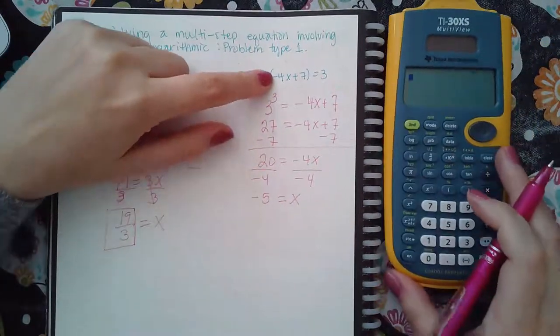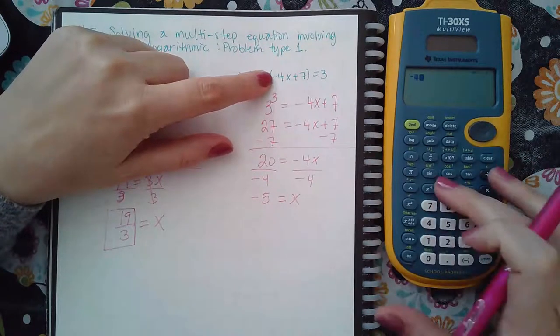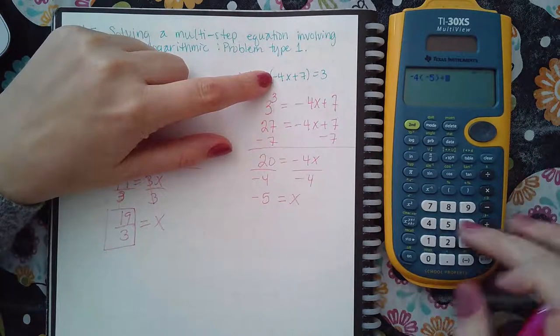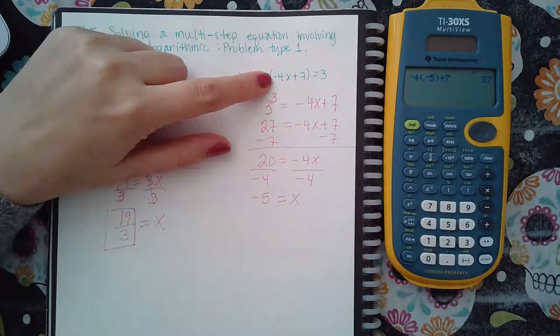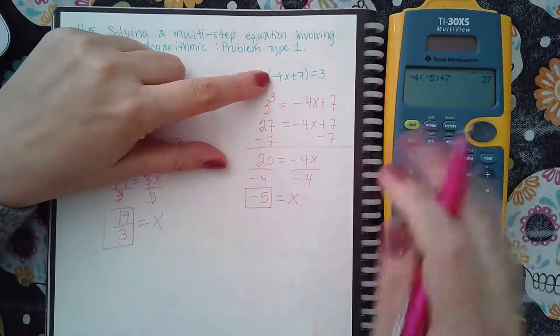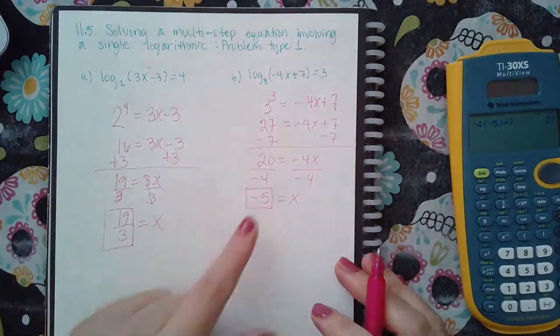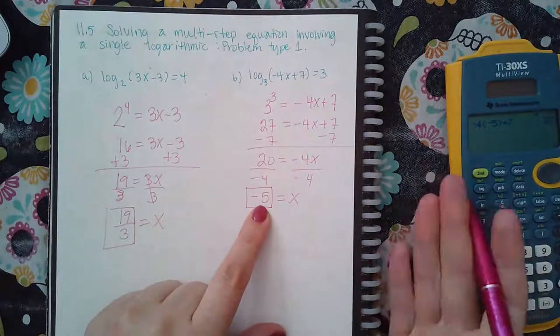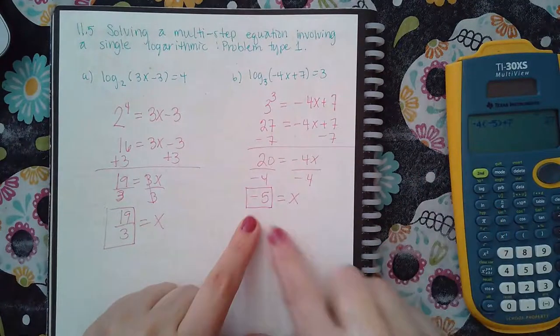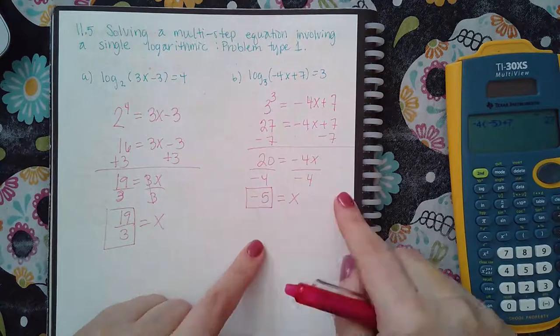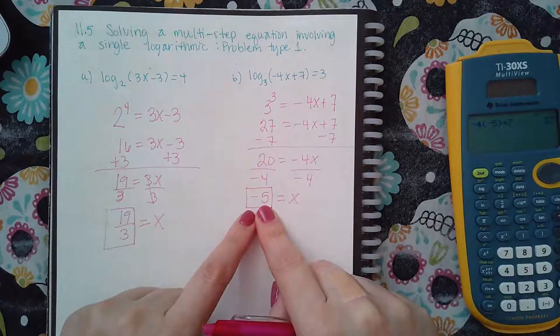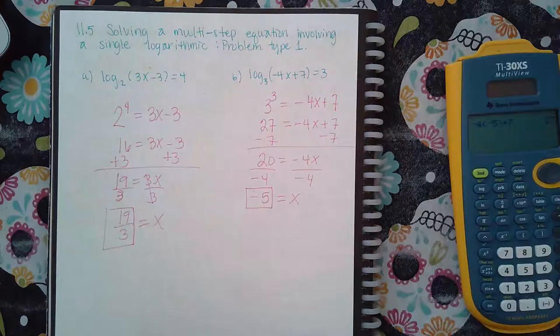The base is 3, that's not negative, so the base is fine. We want to make sure that the argument is not going to be negative. So when I plug in negative 5, I get positive 27, so this is a good answer. What happens if you do your math and this gives me a negative argument? If it's the only x value you found and it does not check out, then you would say that the answer has no solution.